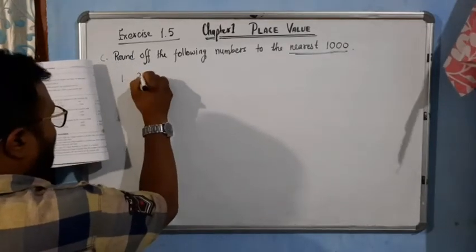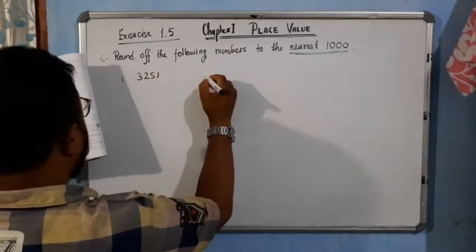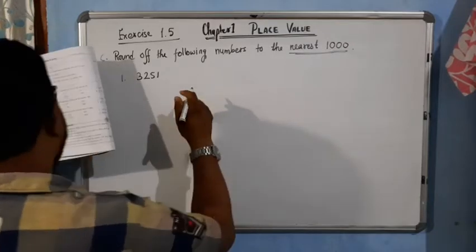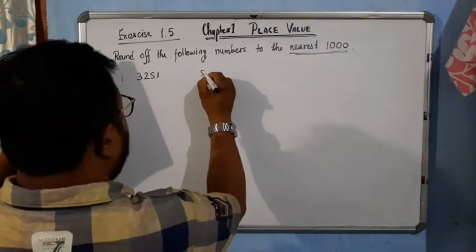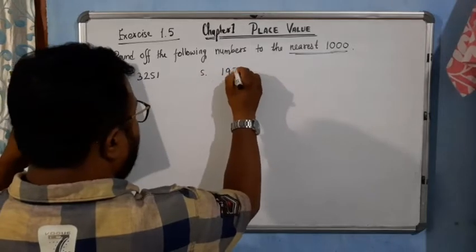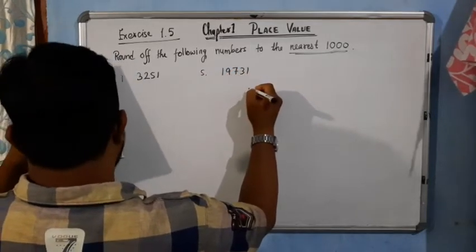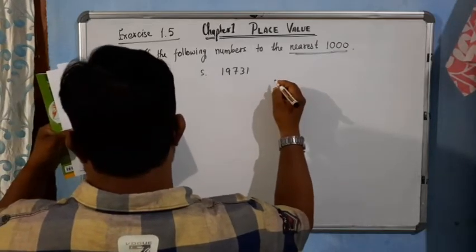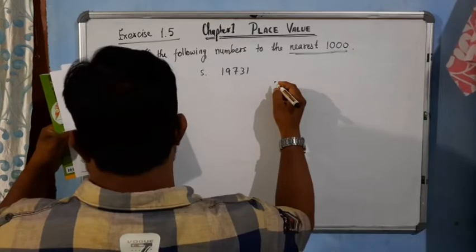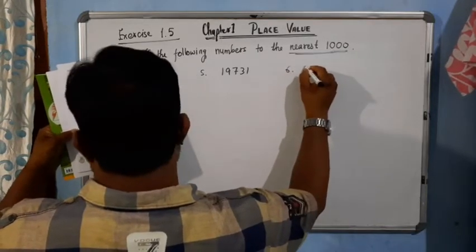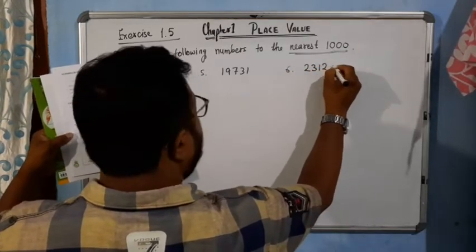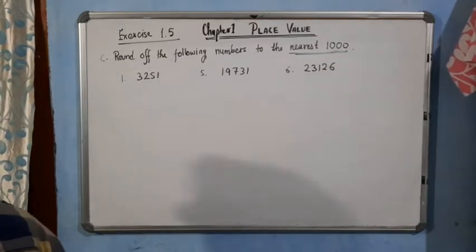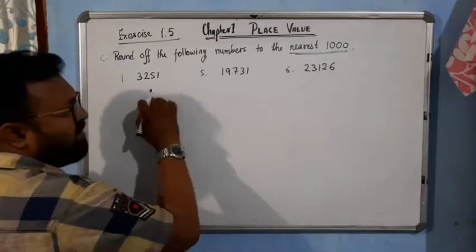We'll take: number 1 is 3251, then a higher number — number 5 is 19731, and number 6 is 123126. Only three examples; the rest you can do by yourself.